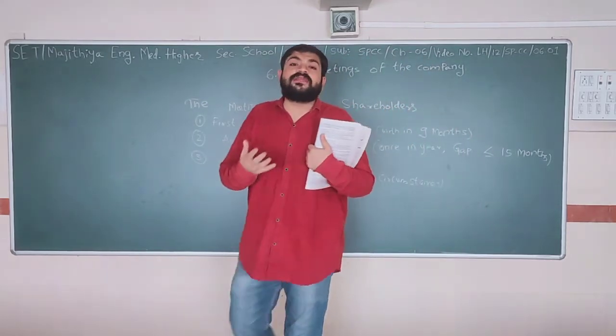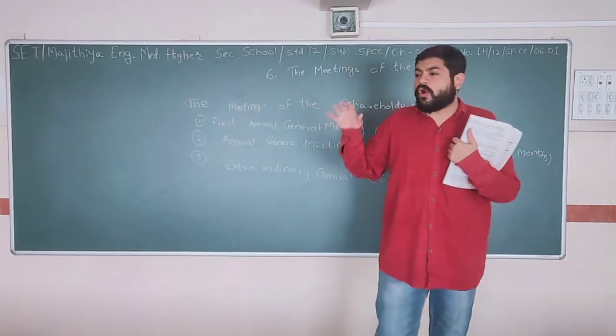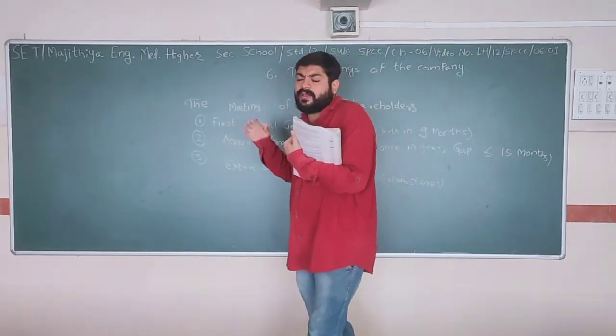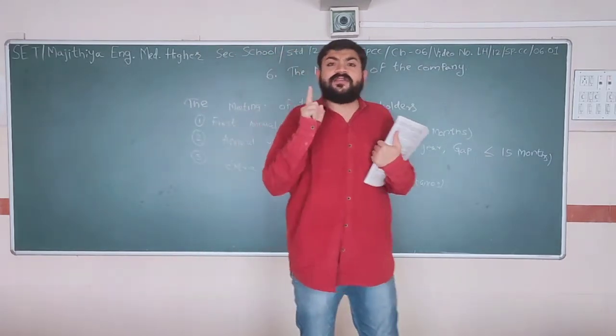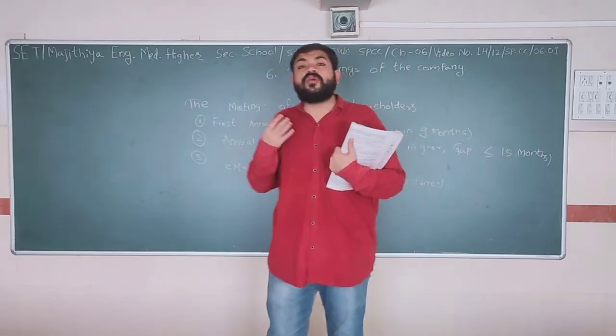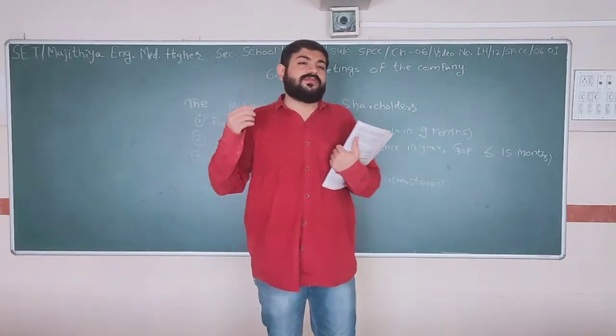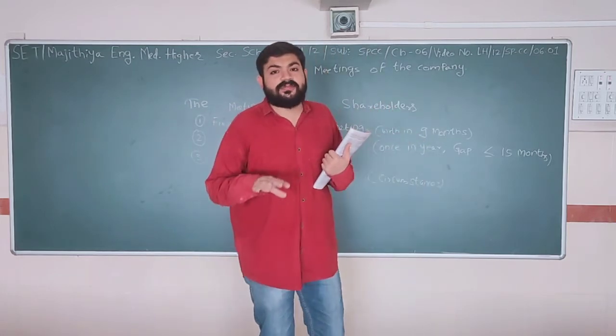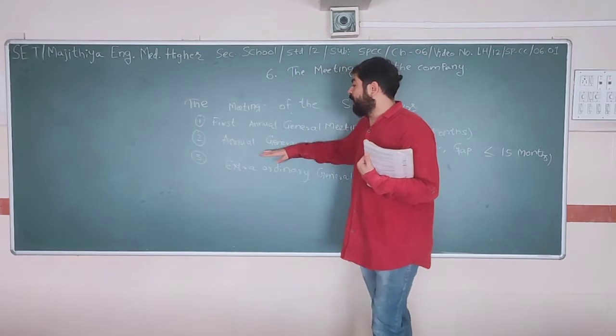In the first annual general meeting, what business is discussed? Information about the company, company's acts, agenda, memorandum of association, articles of association - everything is discussed in the first annual general meeting. In the regular general meeting, the books of accounts of the last year, the auditors who are going to be appointed, resolutions, ordinances, banking - everything is done in the regular general meeting.